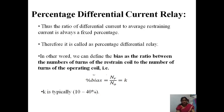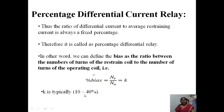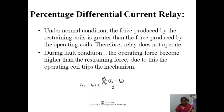Thus, the ratio of differential current to the average restraining current is always a fixed percentage — therefore it is called a percentage differential relay. The bias is defined as the ratio of the number of turns of the restraining coil to the number of turns of the operating coil: percentage bias = Nr / N0, represented as K, where K is typically from 10 to 40%. For a relay to operate, I1 minus I2 must be greater than (Nr/N0) × (I1 + I2)/2.